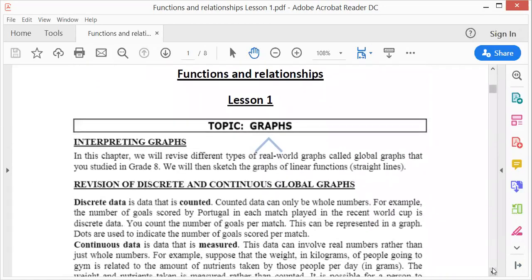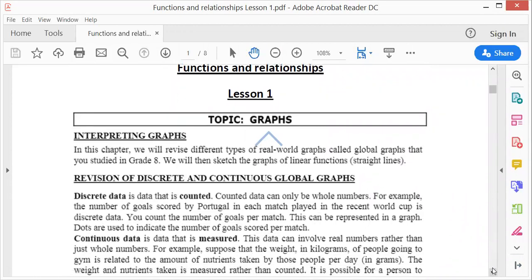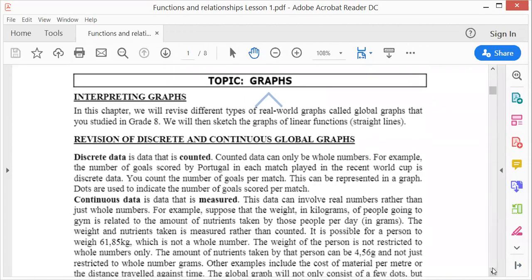Let's start off with the first one: functions and relationships and graphs. Let's get started. Lesson one, functions and relationships. The topic is graphs, now interpreting graphs. In this chapter we will revise different types of real world graphs, global graphs. You've done some of them in grade 8. We will then sketch the graphs of linear functions later on. Linear functions just means straight line.